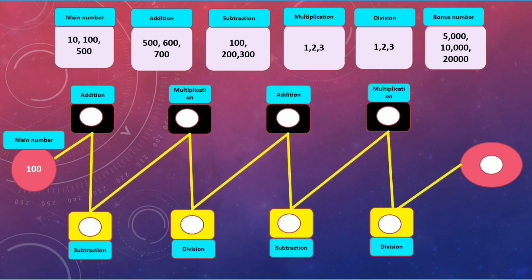If I select 100 from the main number bowl, the main number is 100. Now the game begins with the main number. The next zone is addition, so I have to travel to the addition zone. If I select 600 from the addition zone, 100 plus 600 is equal to 700. So my total score is 700.